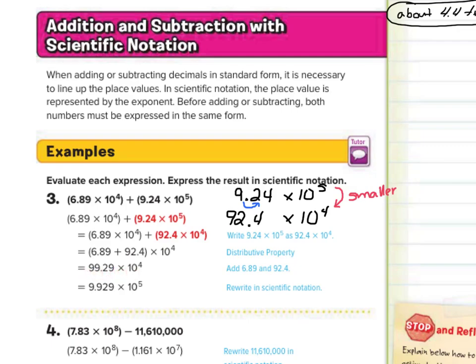This is not in scientific notation yet. We need to make this 9.929. Since we got one place smaller, we need to make our 10 to the fourth one bigger — back to 10 to the fifth. So our final answer is 9.929 times 10 to the fifth.